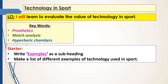What I'd like you to do is go to a new page in your book, write down the title and underline it, write down the learning objective and the keywords. The title is technology in sport, the learning objective is 'I will learn to evaluate the value of technology in sport', and the keywords are prosthetics, match analysis, and hyperbaric chambers — I'll explain what those things are as we go through.